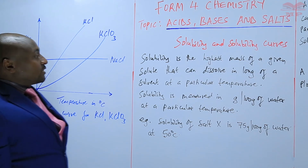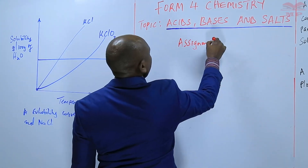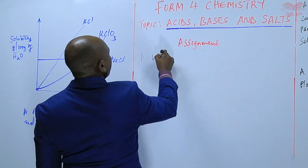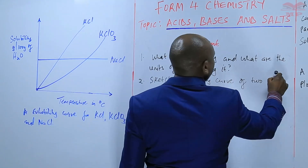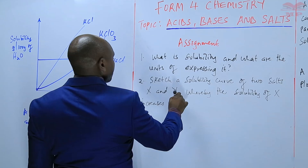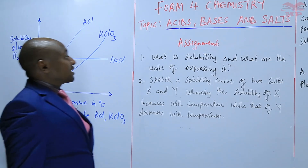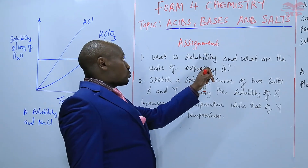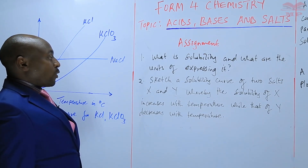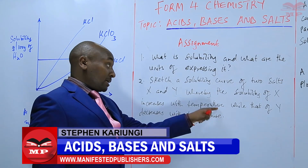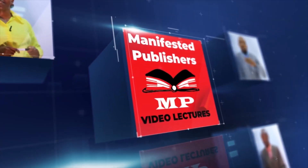Having understood solubility and the solubility curve, we want to look at how these can be applied. For the assignment: first, what is solubility and what are the units used to express it? Second, sketch a solubility curve of two salts X and Y, whereby the solubility of X increases with temperature while that of Y decreases with temperature. We'll stop there until next time — goodbye.